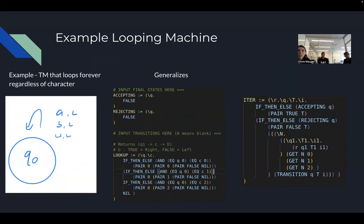Here's an example of a machine that loops forever, to show we can also represent non-halting machines. We read whatever character is at index zero, go left (which stays at zero), and update the character with the exact same character — so nothing changes. The current state stays at zero, the index stays at zero, and the character is unchanged. Since the accepting and rejecting functions always return false, iter always reaches the last branch and calls transition with the same q, t, and i, recursing infinitely without stopping.